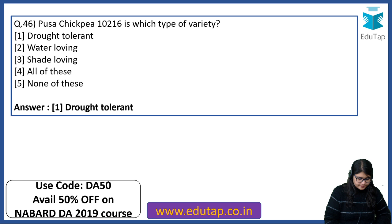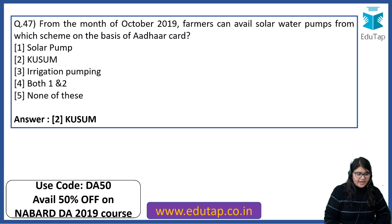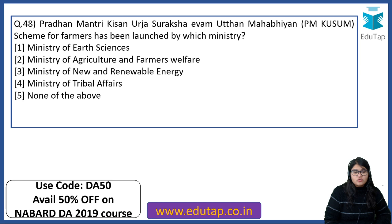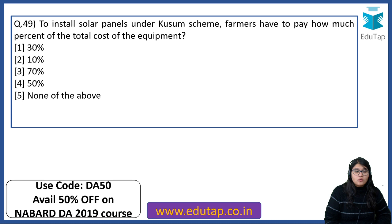From October 2019, farmers can avail solar water pumps from which scheme on the basis of Aadhaar card? The right answer is Kusum. Pradhan Mantri Kisan Urja Suraksha evam Uttam Mahabhiyan scheme for farmers has been launched by which ministry? The right answer is Ministry of New and Renewable Energy. To install solar panels under the Kusum scheme, farmers have to pay 10% of the total cost of the equipment.